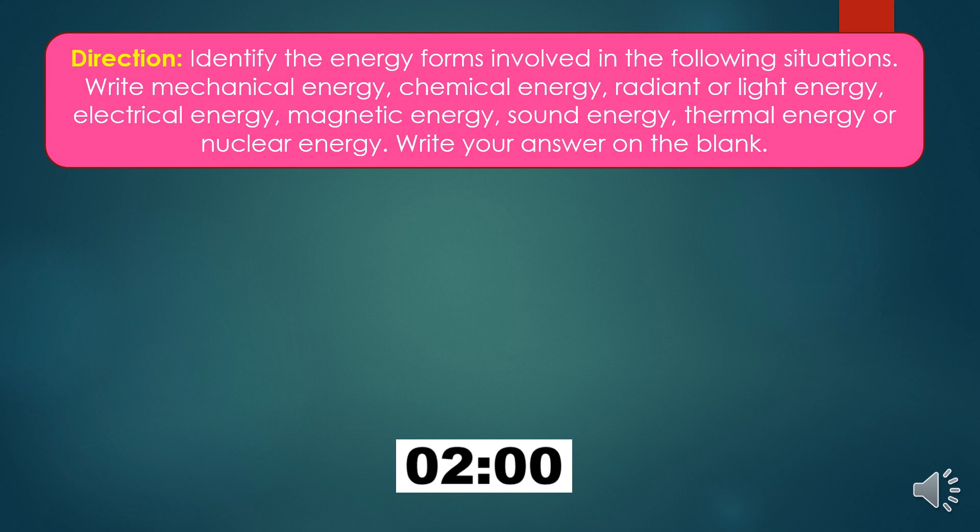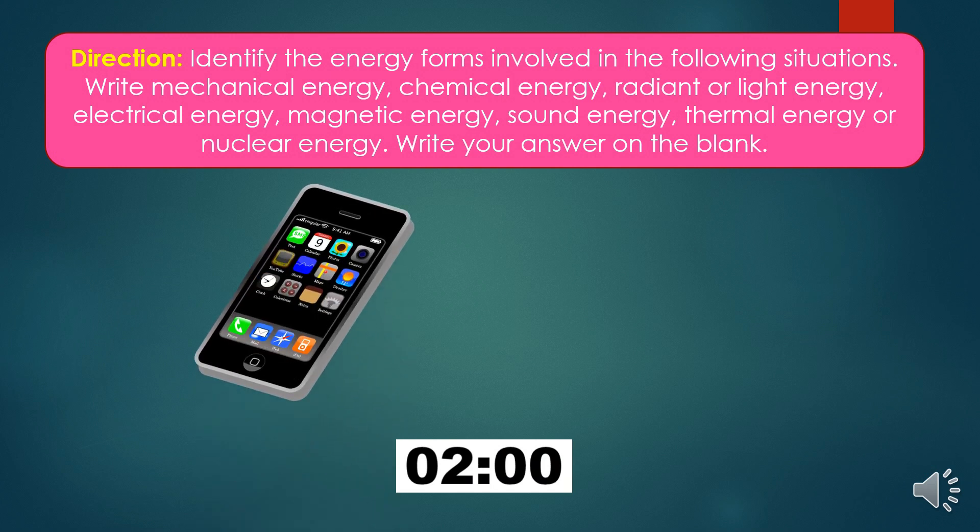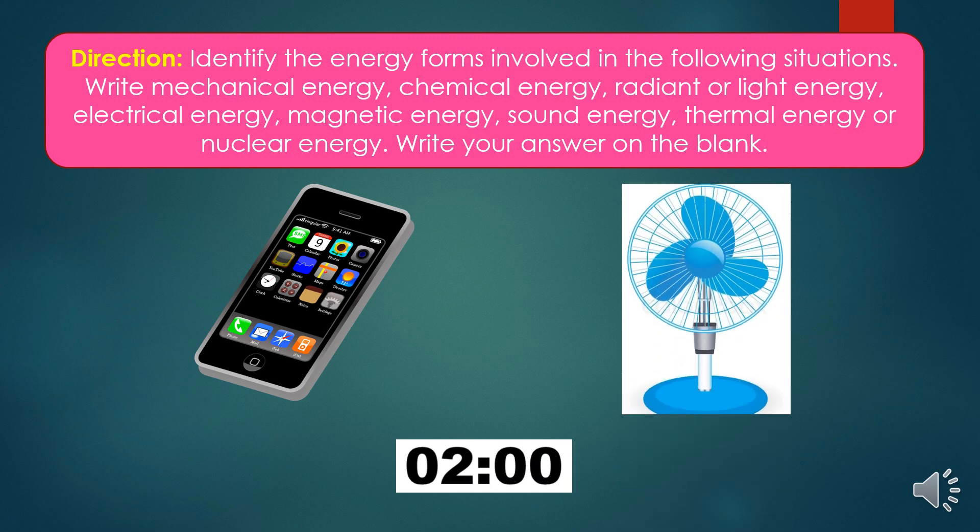Let us read the direction. Identify the energy forms involved in the following situations. Write mechanical energy, chemical energy, radiant or light energy, electrical energy, magnetic energy, sound energy, thermal energy, or nuclear energy. Write your answer on the blank. So, the first picture in the sheet is a cell phone. What energy forms are produced when we use it? What is the next picture in the sheet? Yes, that is an electric fan. What energy forms are involved in the use of a fan? You have two minutes to do the activity.